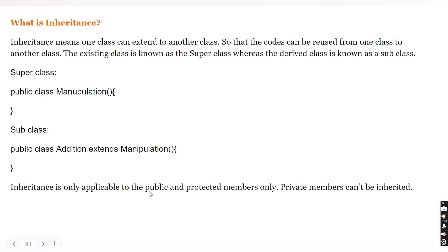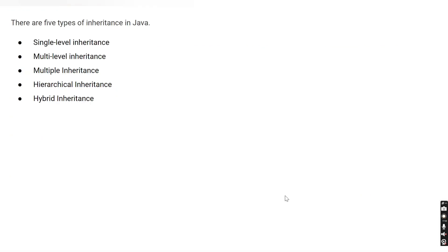If you want to create a subclass, you use the `extends` keyword. Also, inheritance is only applicable to public and protected members — private members cannot be inherited because private members can only be accessed within the same class they are declared in, so they won't be available inside the subclass.